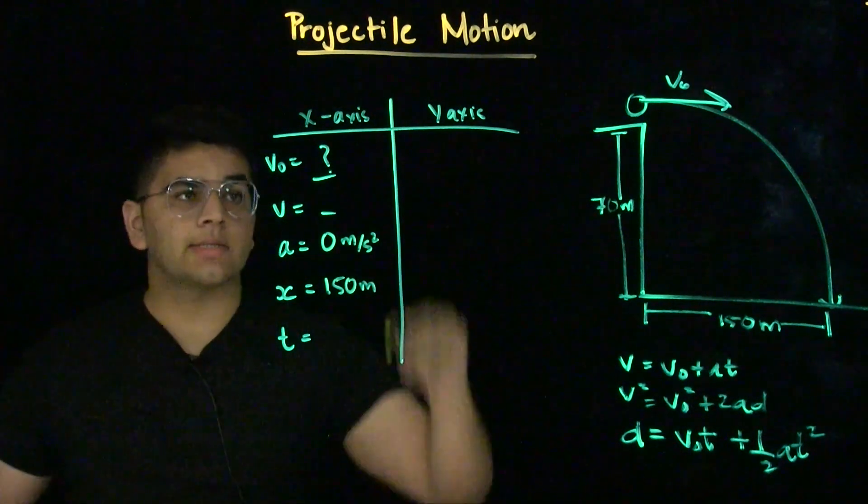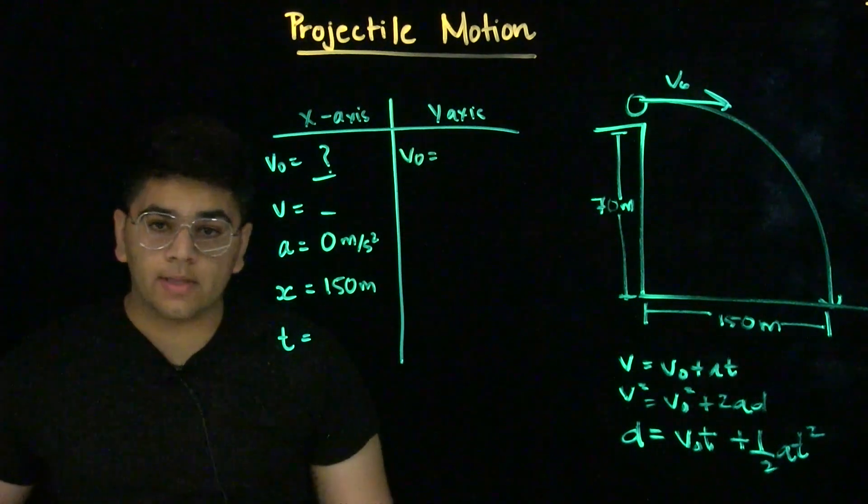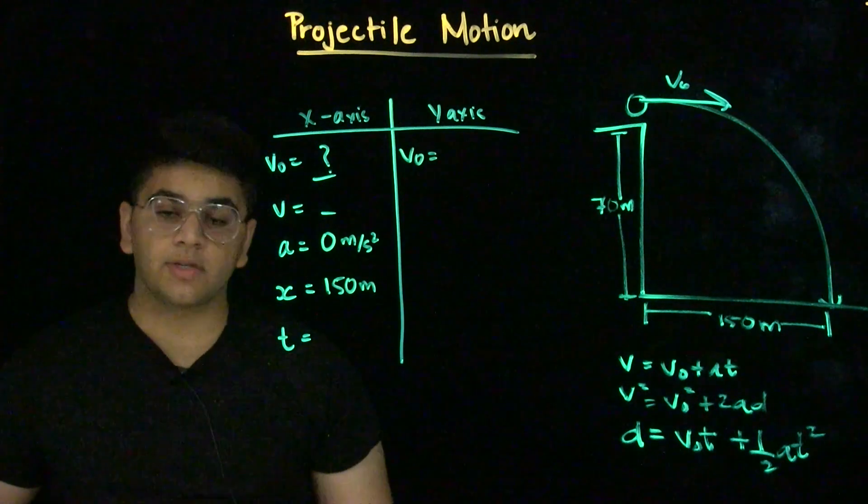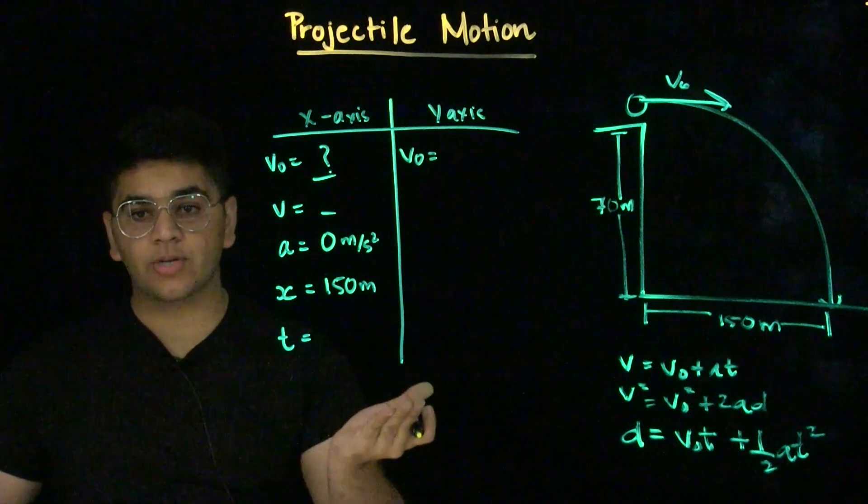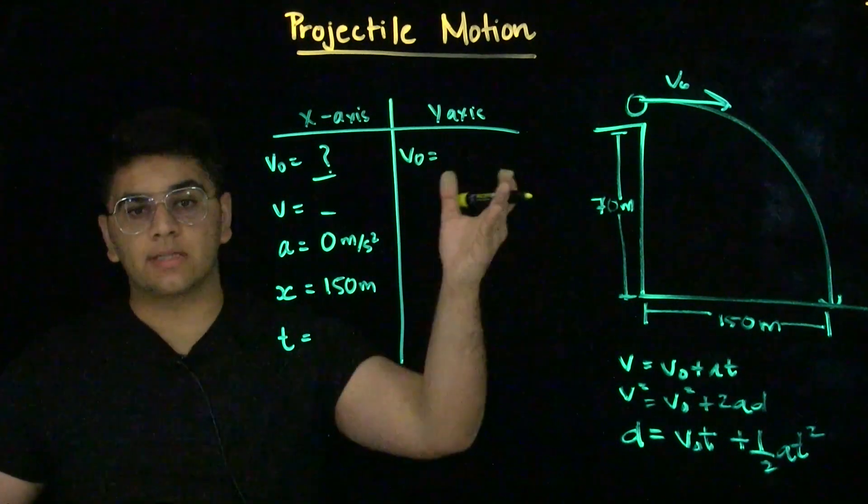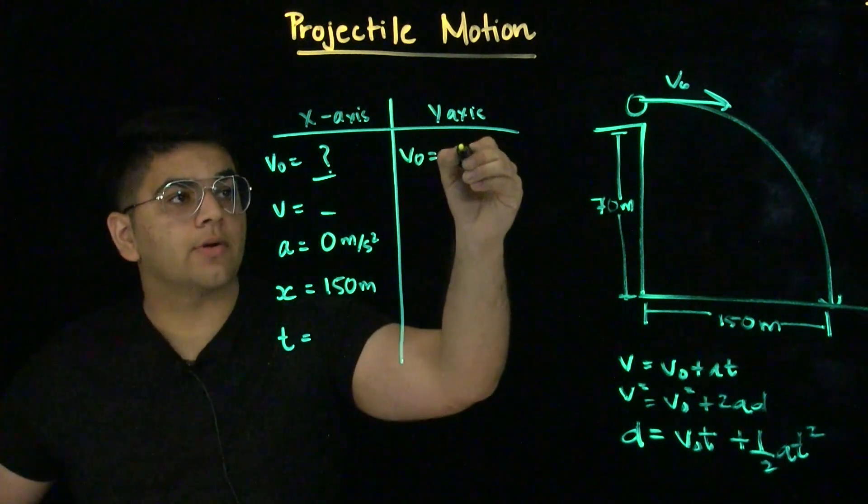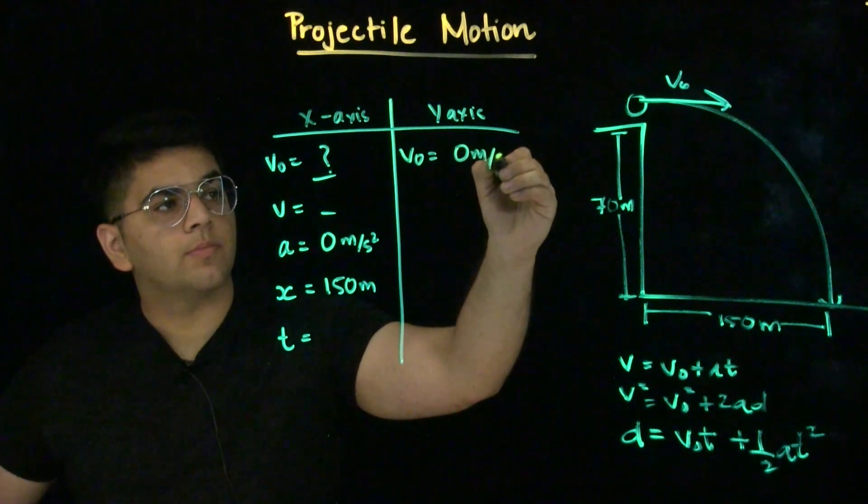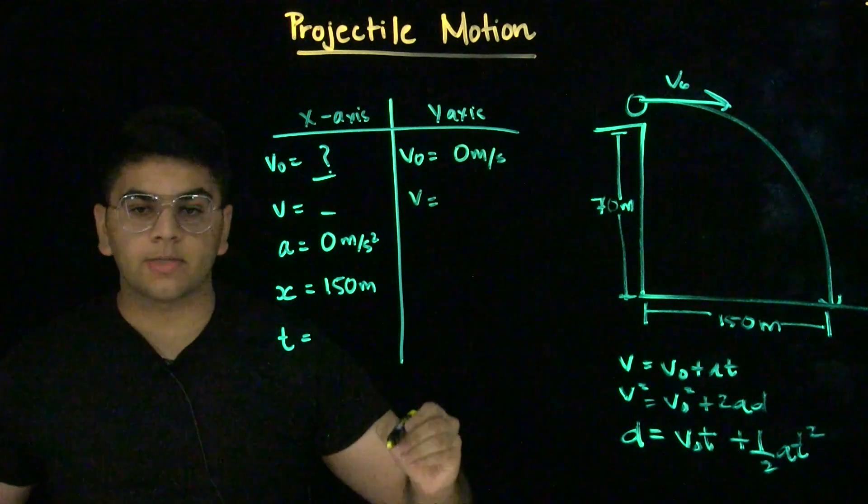Now, let's move to the y-axis, initial velocity. A key word in that problem was that the rock is thrown horizontally off the top of the cliff. Since the rock is thrown only in the x-direction, it has a velocity only in the x-axis when it begins its motion at the top of the cliff. So, the initial velocity in the y-axis would be zero whenever it is stated like that in the problem. We do not know final velocity.